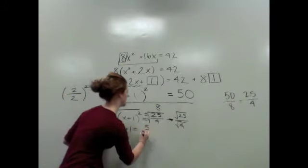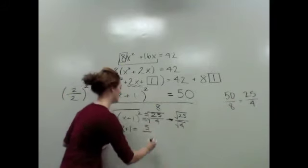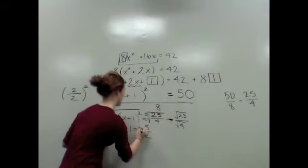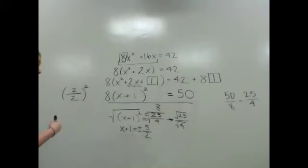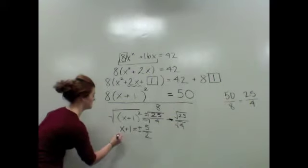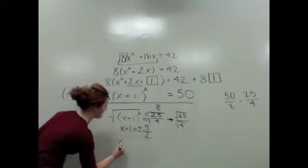Now remember, we have plus or minus. We have the positive 5/2, or we have the negative 5/2. The last thing to do to get x by itself is to subtract 1. So we have x equals -1 ± 5/2.